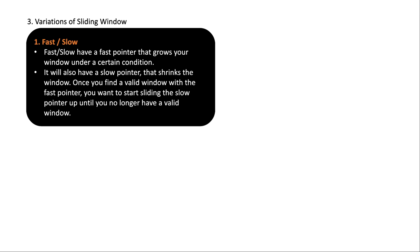The first variation is fast and slow. One pointer grows fast and the other grows slow. The fast pointer grows the window under certain conditions, while the slow pointer shrinks the window. Once you find a valid window with the fast pointer, you start sliding the slow pointer until you no longer have a valid window.